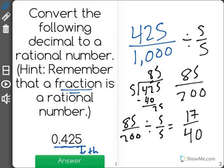Now I see that I have 17 in my numerator, which is a prime number, so I know I cannot simplify this any further. So 0.425 as a fraction is 17 out of 40.